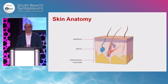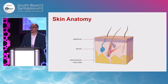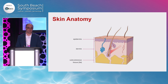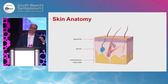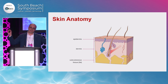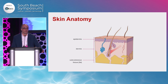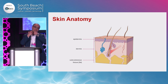Let's start at the fundamental level — at skin anatomy. As you all know, the skin is composed of three main layers: epidermis, dermis, and the subcutaneous tissue. Between the epidermis and dermis, there's this thin blue line, what we call the basement membrane zone, and that contains the structural proteins that are very important in bringing the skin together.